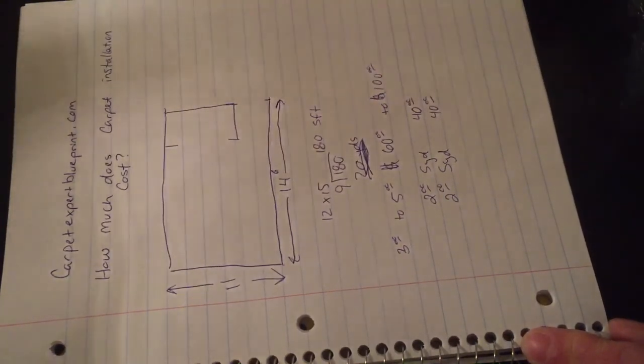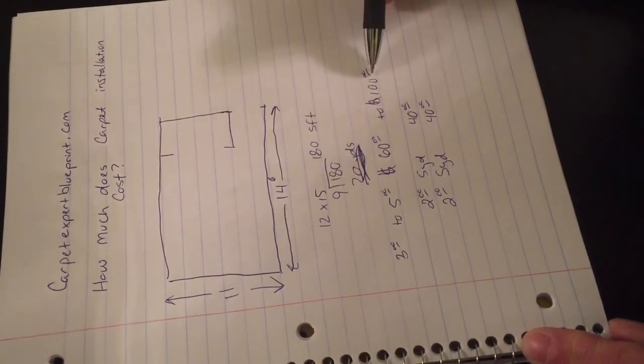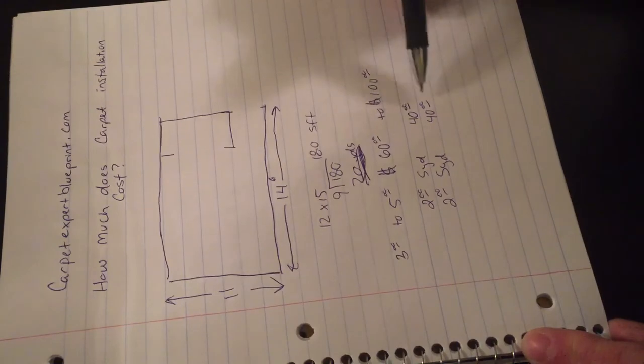So assuming you have furniture, you have old carpet to remove, and you need someone to show up and put it in, add all these numbers up. You have $60 to $100 for the basic install and then $40 and $40.